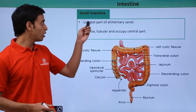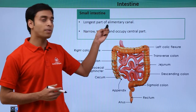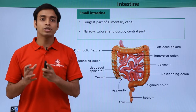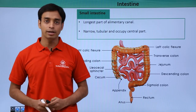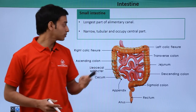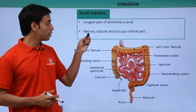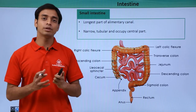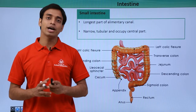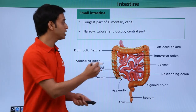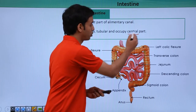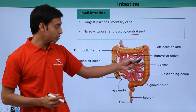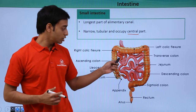The small intestine is the longest part of the alimentary canal and it is the most highly coiled structure of the alimentary canal. It is basically narrow, tubular, and it occupies the central position of the abdominal cavity.